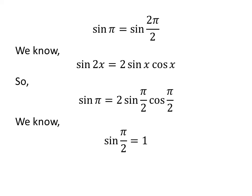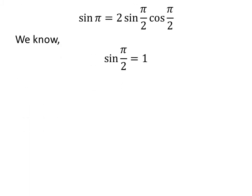We know the value of sine of half of pi is equal to 1. We also know the value of cosine of half of pi is equal to 0.